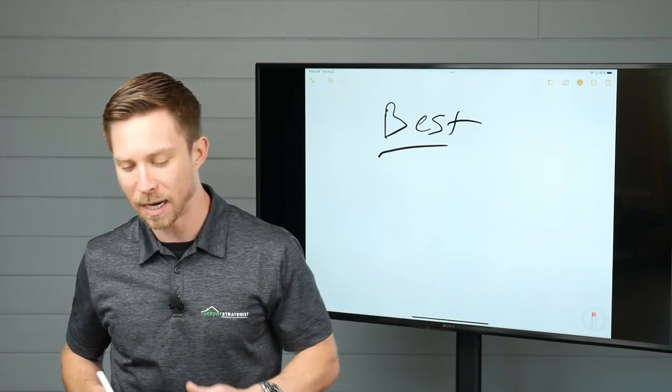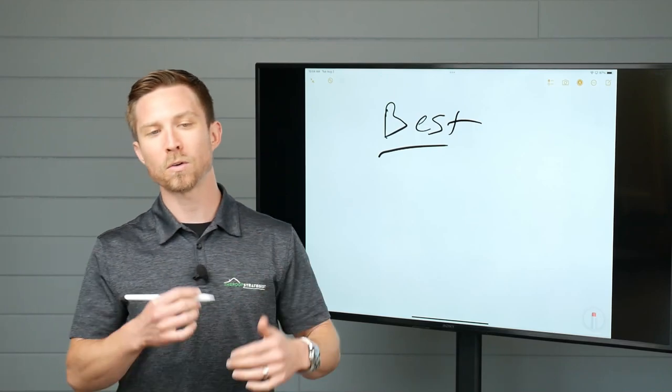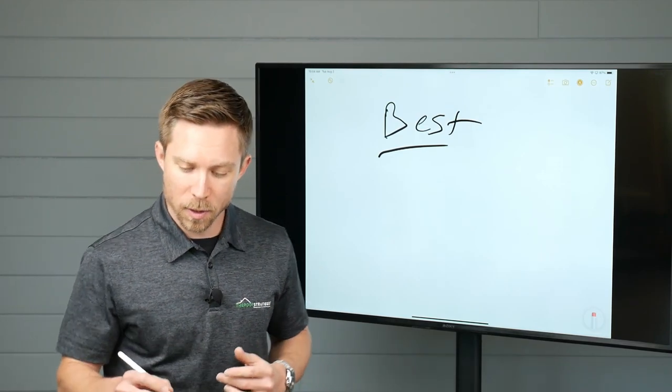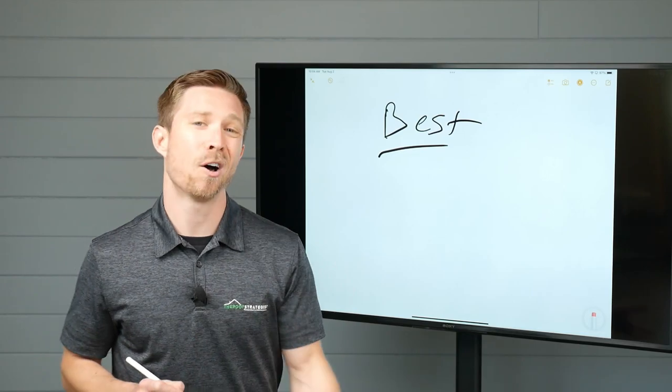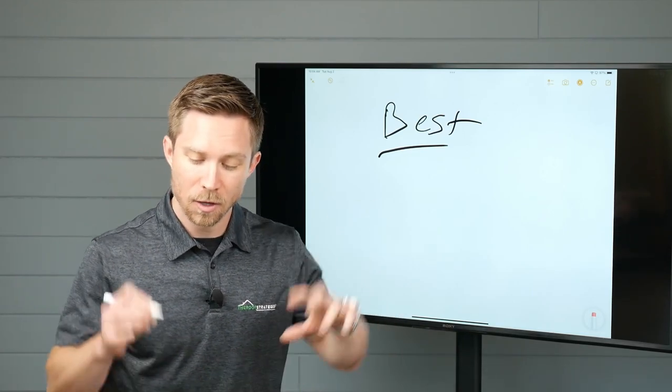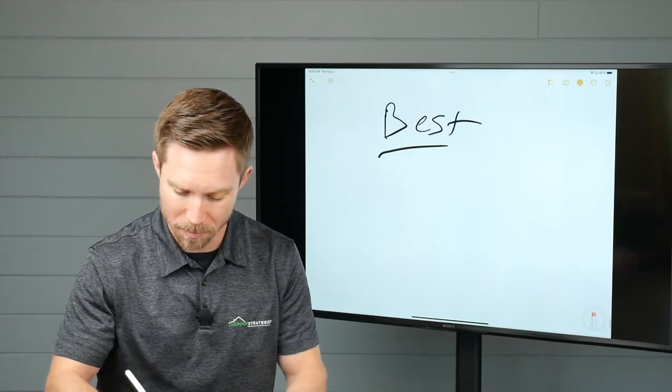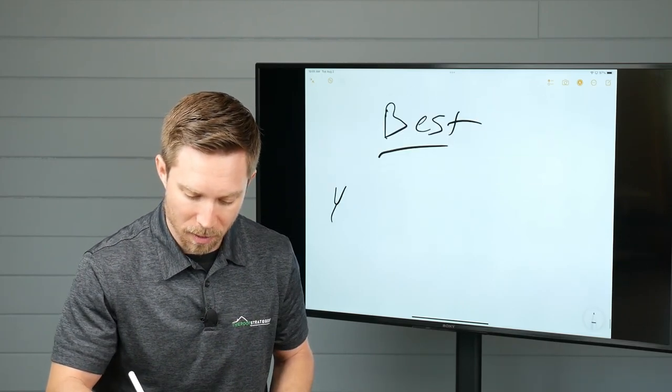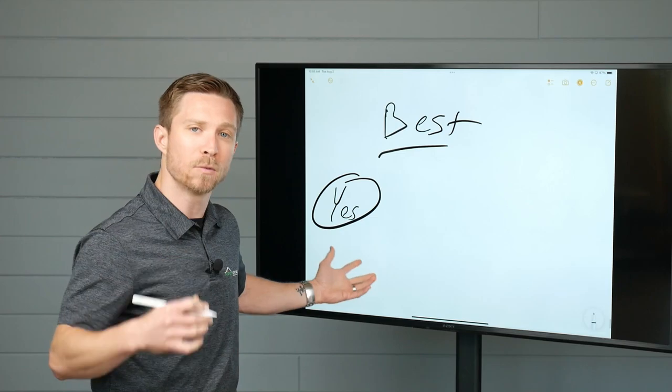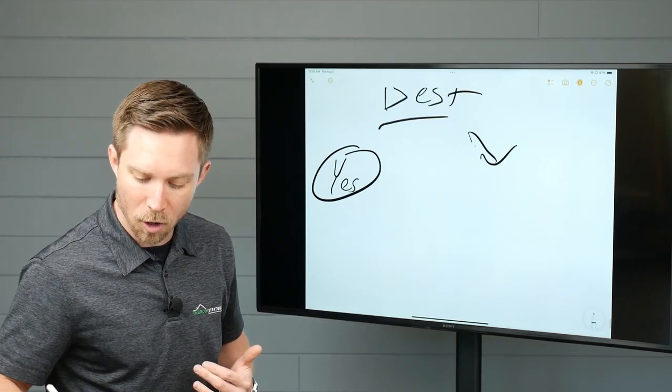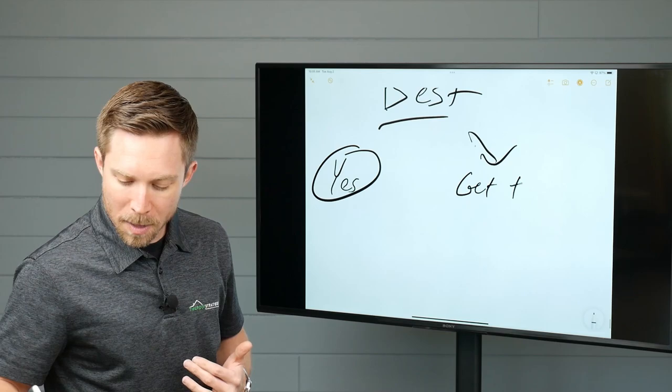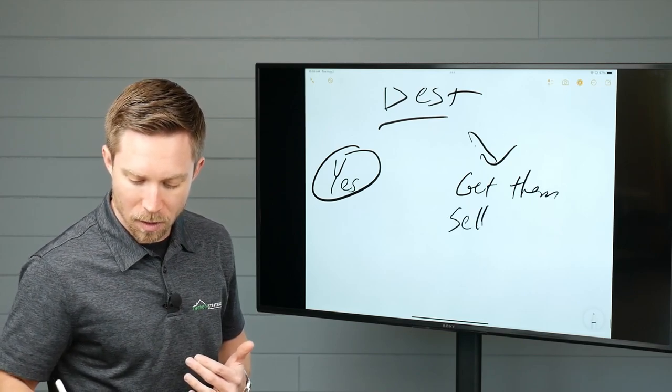So this is going to be a tie down where we get the homeowner to continue selling themselves. So the weak tie downs, all we're looking for really is a yes agreement. Come on, pen. Here we go. Is a yes agreement. All right. That's really it. I just want to get them saying yes. But what I view the best tie downs are is when we get the homeowner, get them selling themselves.